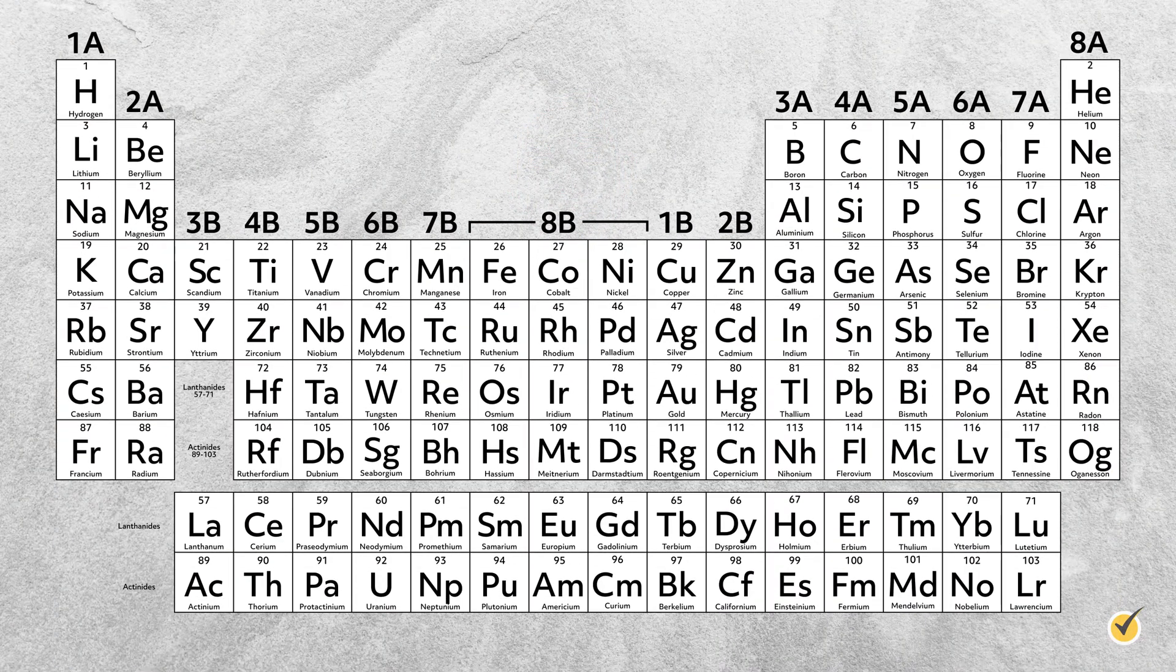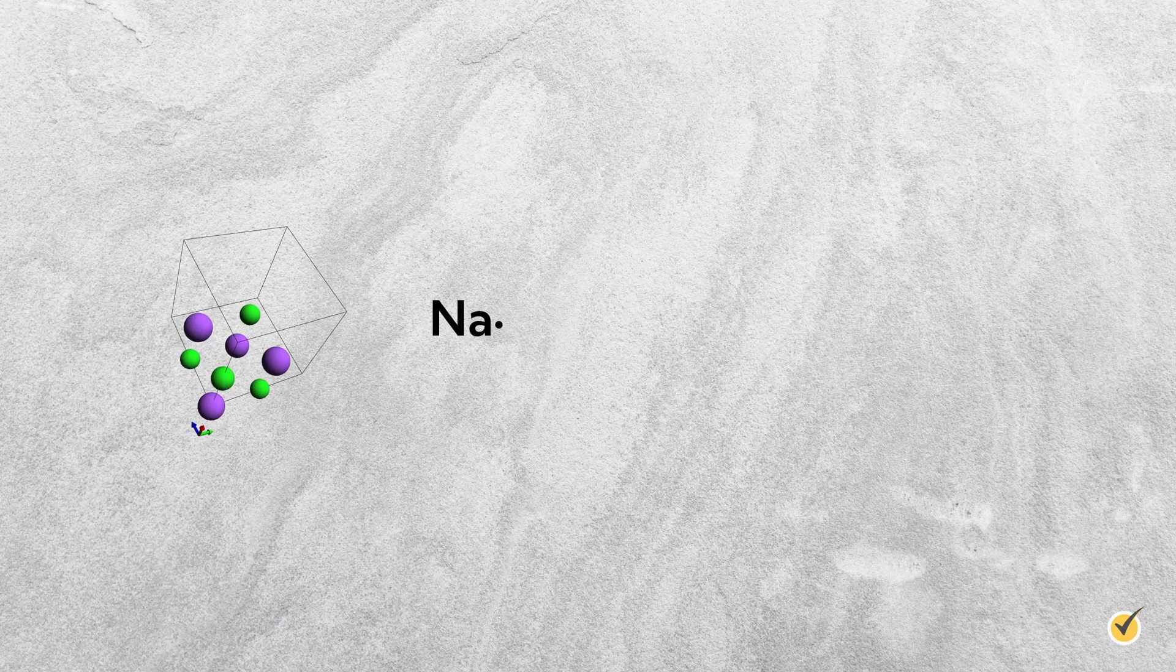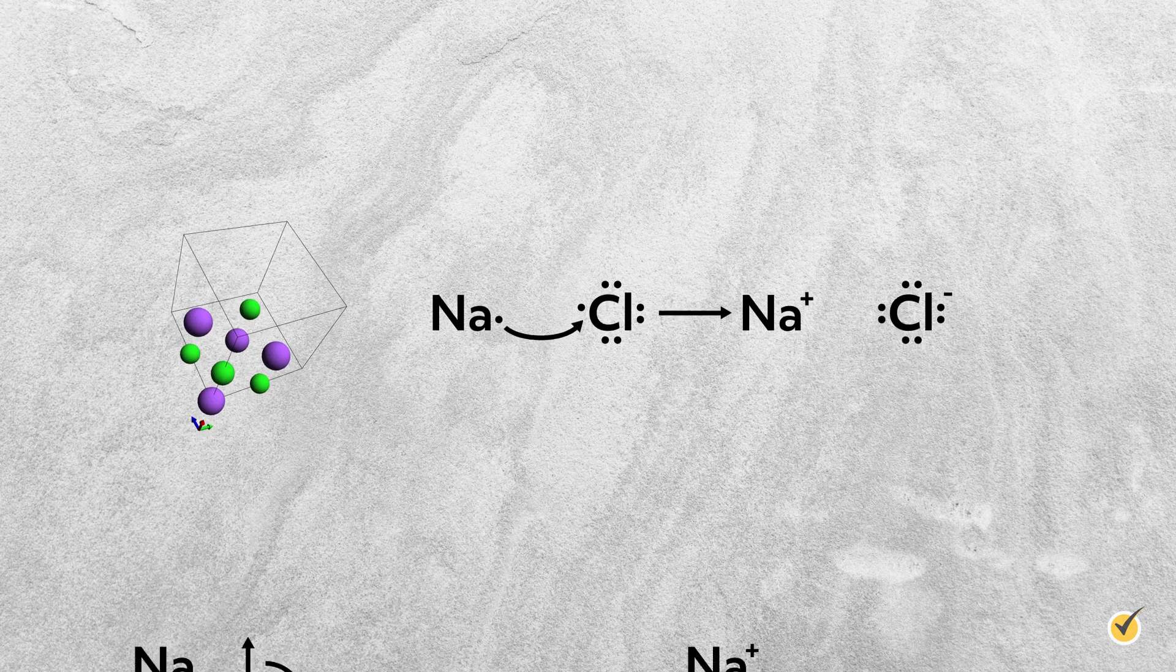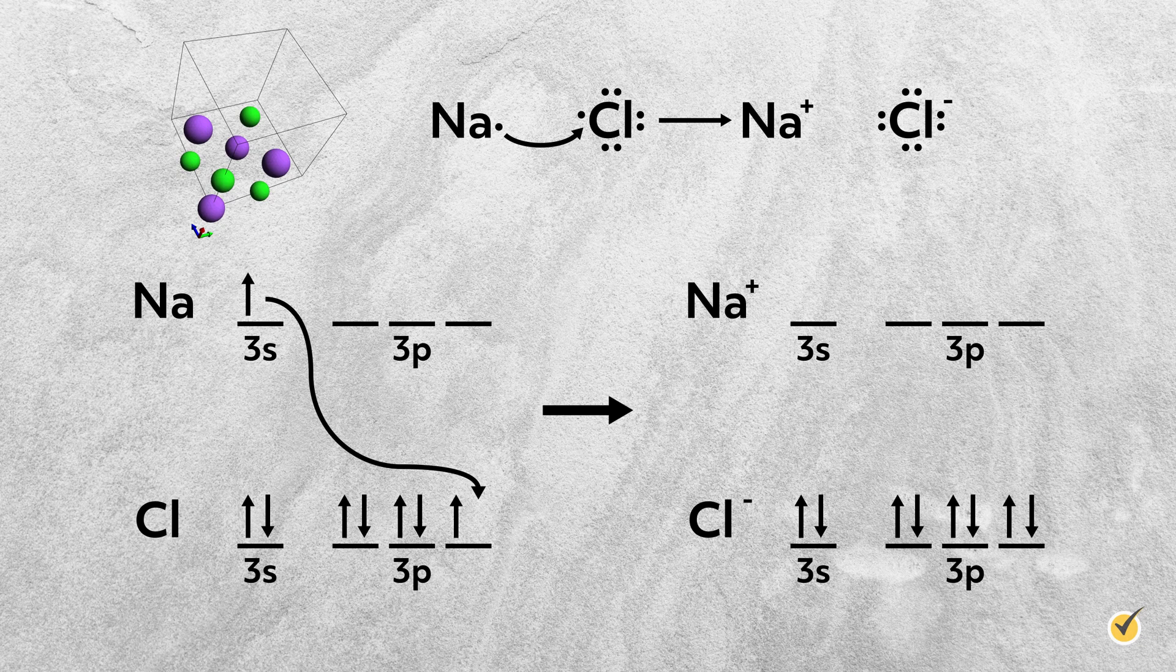Consequently, donating species are metals from the left-hand side of the periodic table, often group 1A and 2A, which have one or two valence electrons. Receiving species are non-metals from the right-hand side of the periodic table, often groups 6A and 7A, which are one or two electrons short of having a filled valence shell. So for example, sodium, a group 1A element, donates one electron to chlorine, a group 7A element, to form sodium chloride. This empties sodium's 3s orbital and fills chlorine's 3p orbital, leaving both with filled valence shells. The sodium cation has the electron configuration of neon, and the chloride anion has the electron configuration of argon.